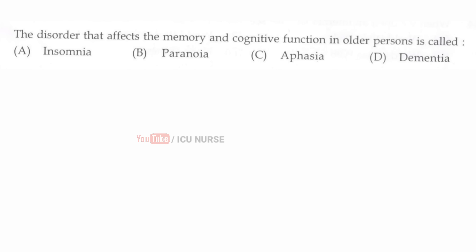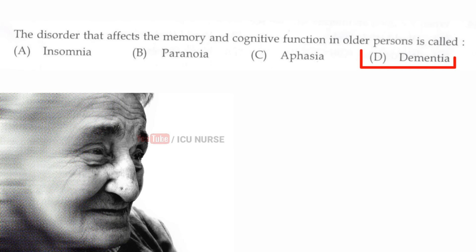The disorder that affects memory and cognitive function in older persons is called? The correct answer is D, dementia.